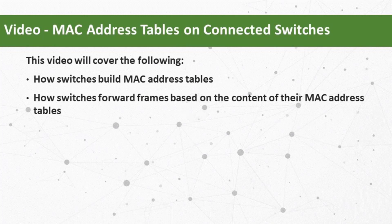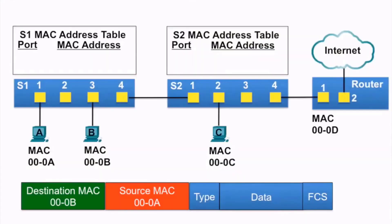In this video, PCA is going to send an ethernet frame to PCB and PCB is going to send an ethernet frame to PCA. We're going to examine how switches S1 and S2 build their MAC address tables and also how they forward frames based on the information in those MAC address tables.